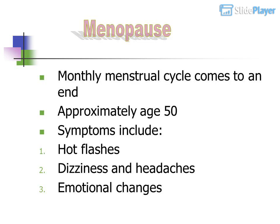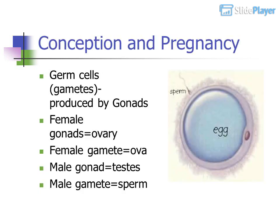Menopause occurs when the monthly menstrual cycle comes to an end, approximately at age 50. Symptoms include hot flashes, dizziness and headaches, and emotional changes.